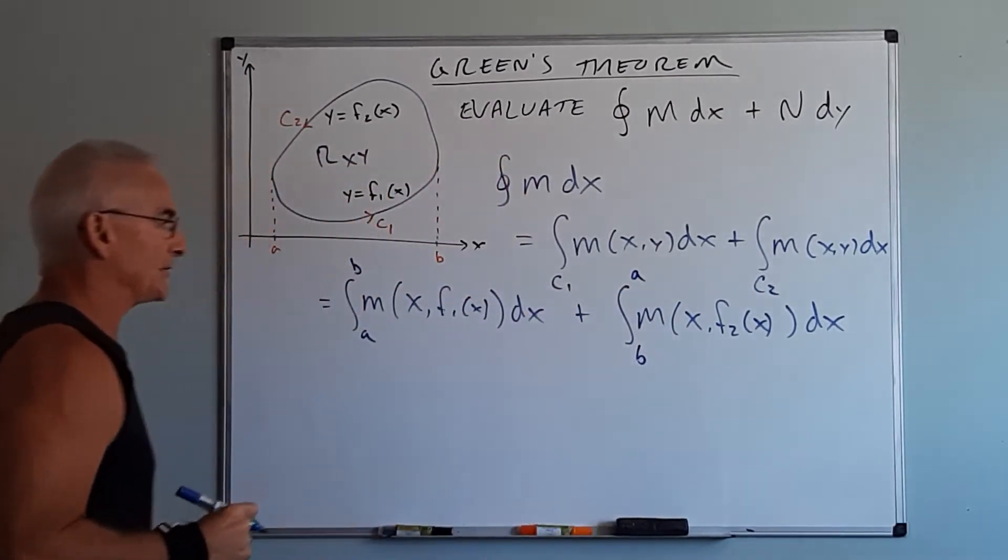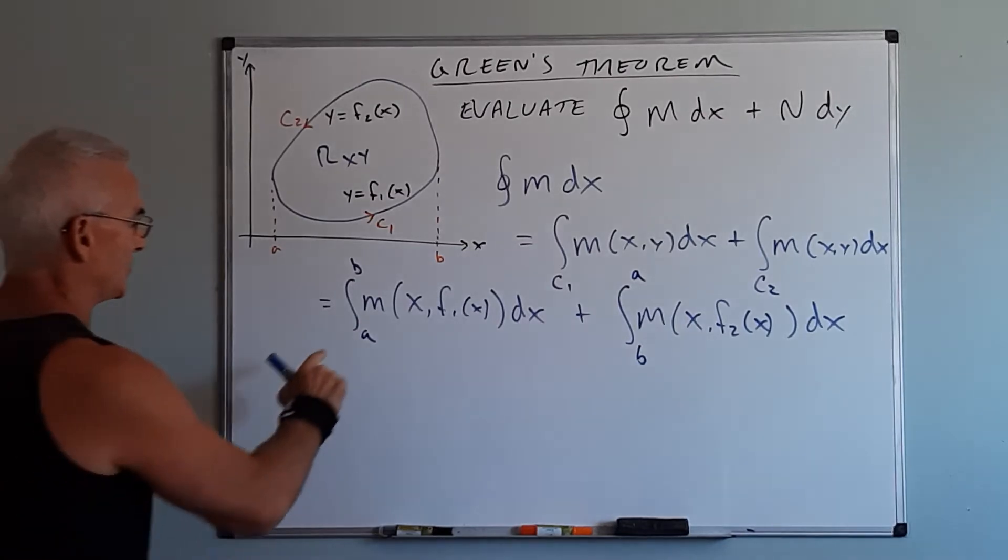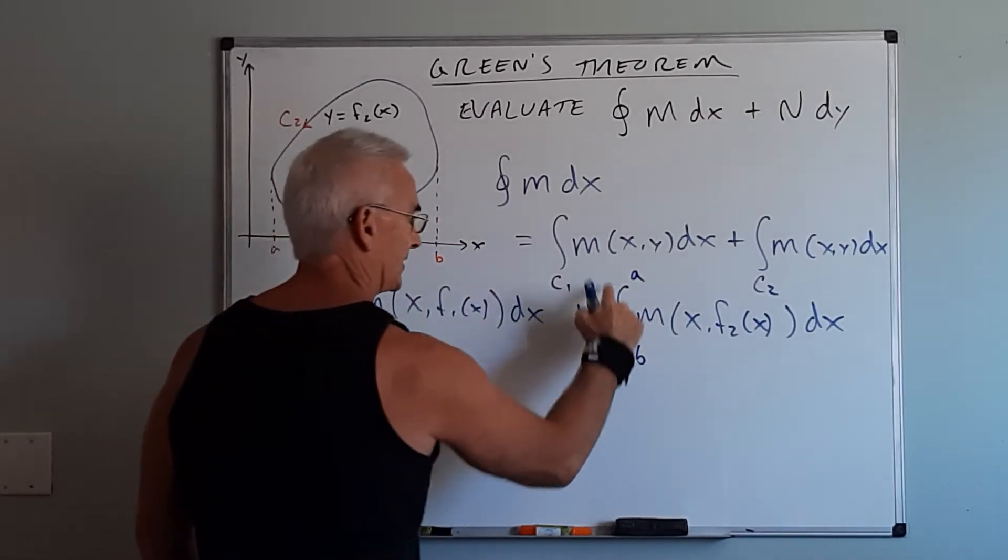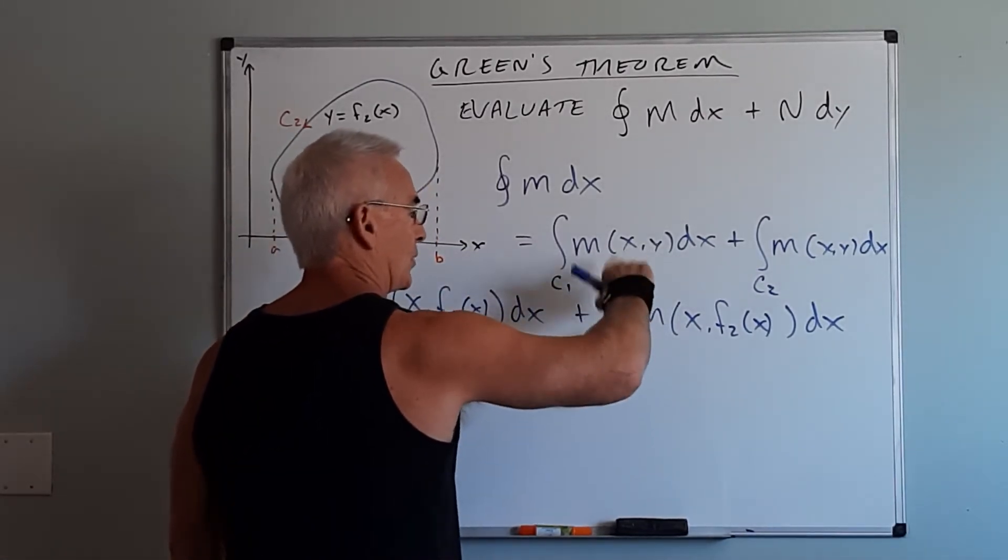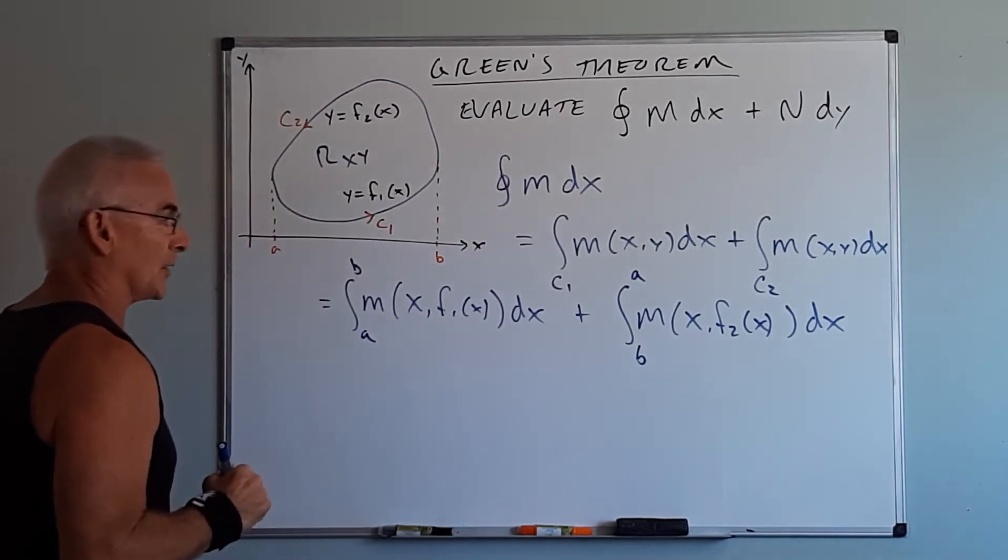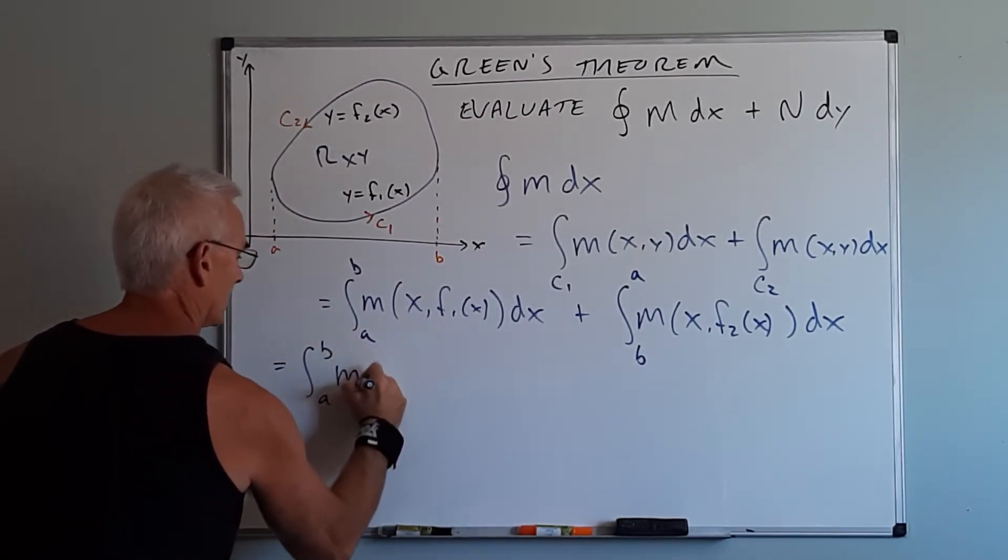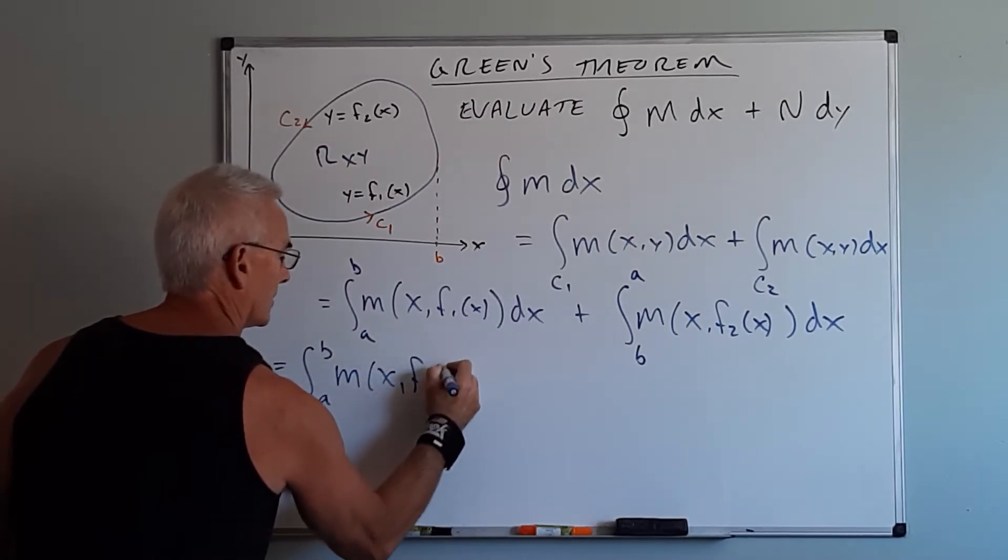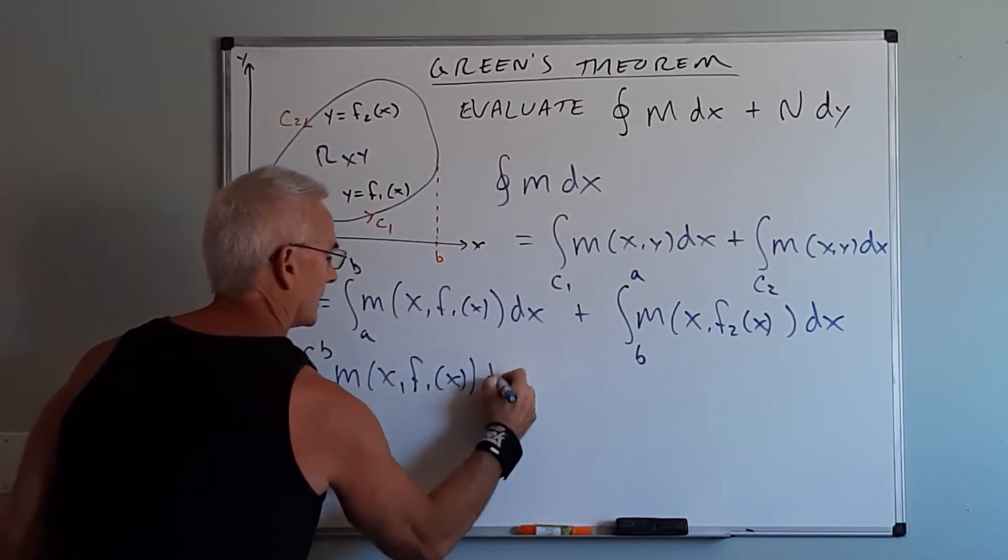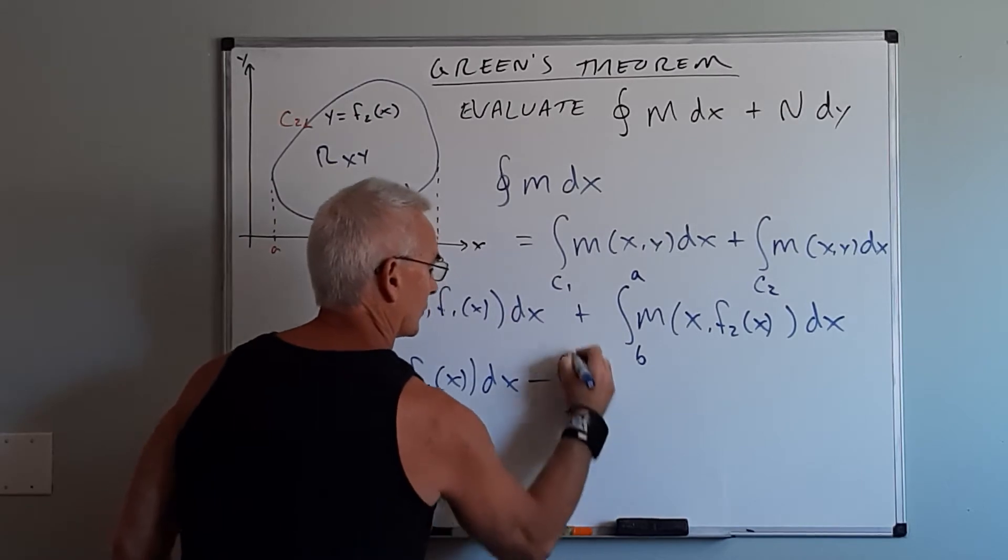Now we'd like to be able to add these but before we can add these we know our limits of integration must be the same. So if I reverse the order of the limits of integration I know I change the sign. So this would become then a to b minus the integral from a to b.